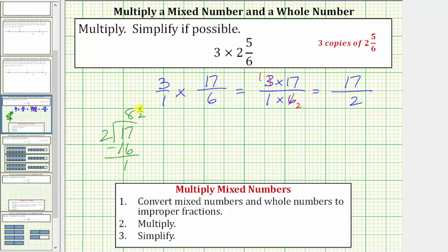To form the fraction, it is always the remainder over the divisor. So the product is 17/2 as an improper fraction or 8 and 1/2 as a mixed number.